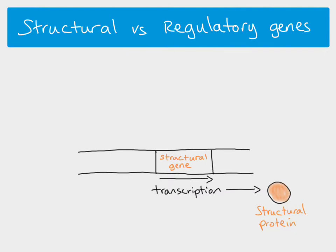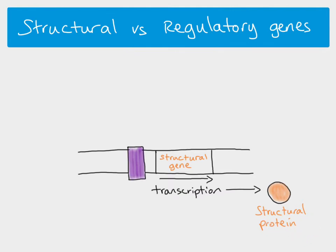If a protein is being produced, it takes energy and material to produce it, so whenever transcription takes place that uses material and energy. Cells don't want to be using material and energy if they don't need to, so if a structural protein is not needed, the cell does not want to be transcribing that structural gene.